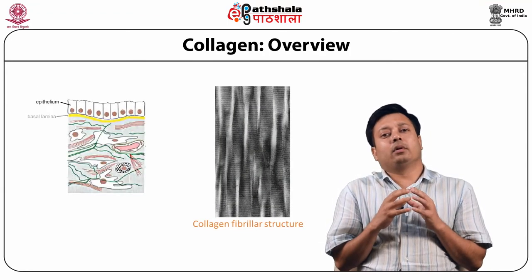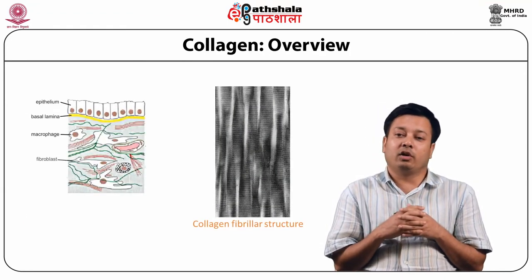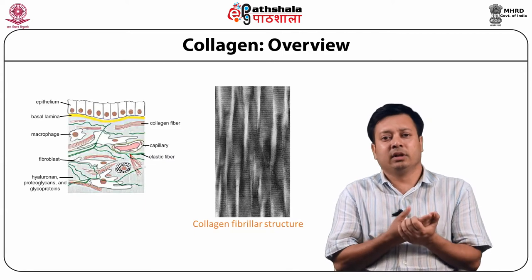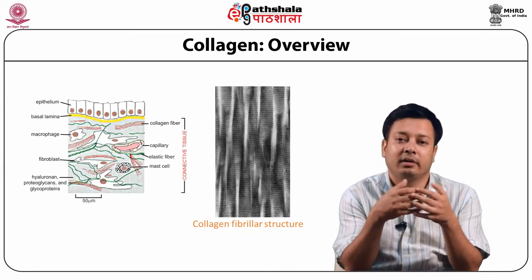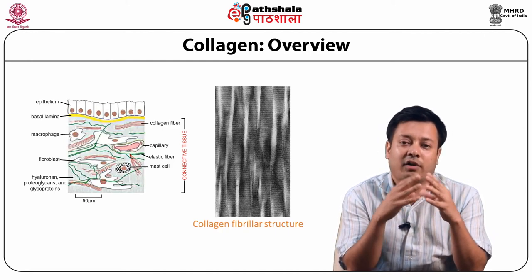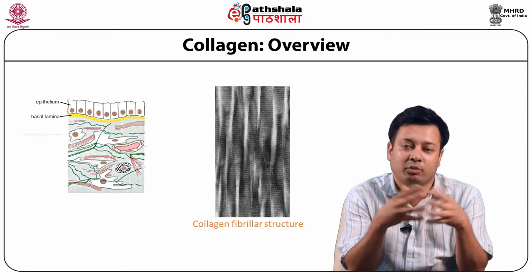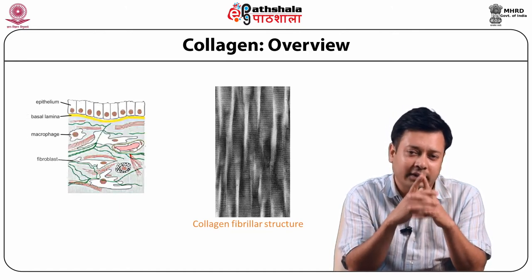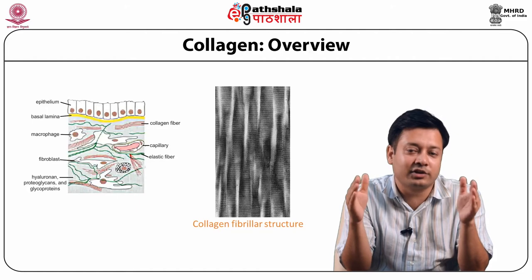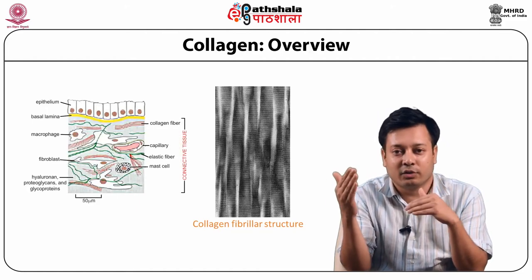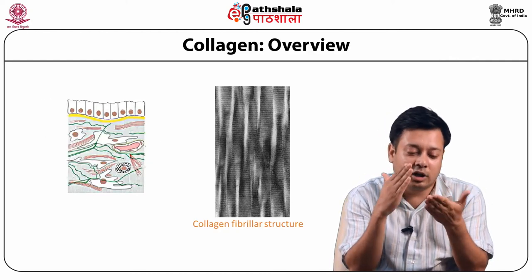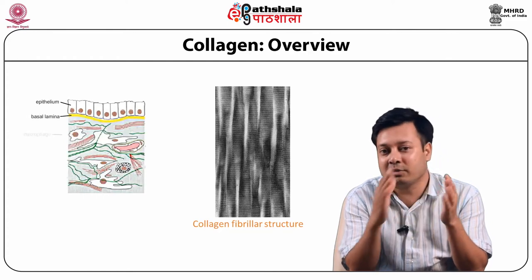Collagen is primarily a structural protein in our body, lying just below the epithelium. It can be found in ligament, tendon, cartilage, and vessels. In fact, 30% of the protein in our body is made up of collagen. Importantly, the structure of collagen is very much conserved across species — meaning evolution has not changed it much — and collagen is actually resistant to enzymatic breakdown.